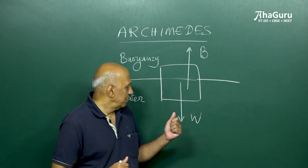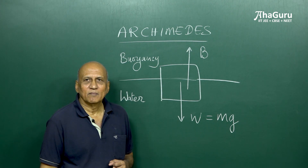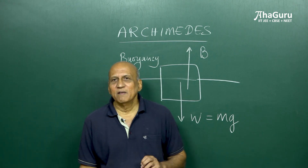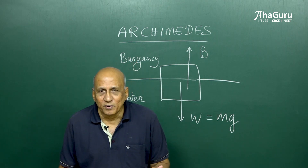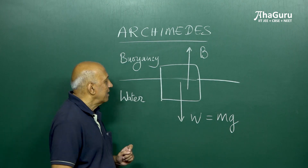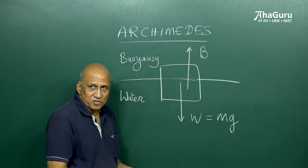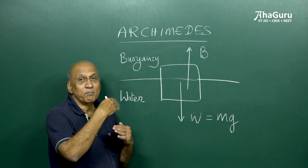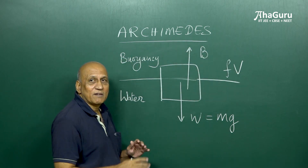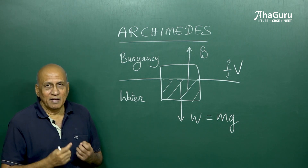We have a formula for the weight of an object: weight is mass times acceleration due to gravity, mg. We need a formula for buoyancy. That formula was given by Archimedes. To understand the buoyancy formula, take a look at this solid. A fraction F of the solid is submerged, and a fraction 1 minus F is above the surface of the liquid. The total volume of the object is V, so F times V is the volume that is submerged — that is, under the surface of the fluid.